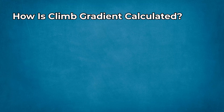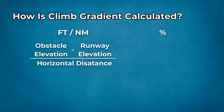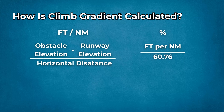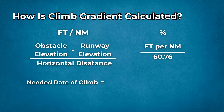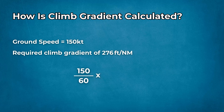How is climb gradient calculated? To calculate climb gradient in feet per nautical mile or percent, start with the required geometry: obstacle elevation minus runway elevation, divided by horizontal distance from the runway end to the obstacle. The FAA provides the formula: CG = (obstacle elevation minus runway elevation) divided by distance. Percent gradient equals feet per nautical mile divided by 60.76. To figure vertical speed needed, rate of climb equals ground speed in knots divided by 60, multiplied by required feet per nautical mile. For example, with a ground speed of 150 knots and a required climb gradient of 276 feet per nautical mile, you need approximately 690 feet per minute.